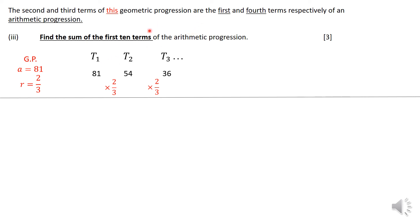This sequence, the 81, 54, 36, these are the first and fourth terms of an arithmetic progression. In my arithmetic progression, my first term will be 54, the second term of the GP. The fourth term of the AP equals the third term of the GP. This summarizes to A equals 54 and A plus 3D equals 36. This is the arithmetic progression I am now supposed to find the first 10 terms of.